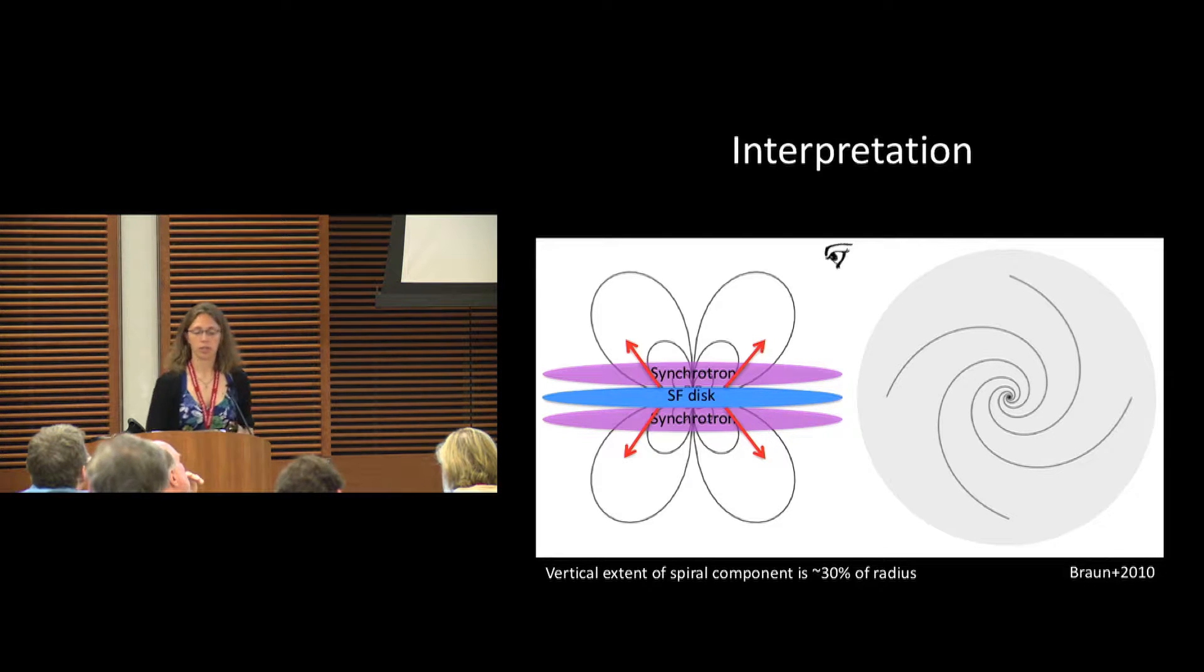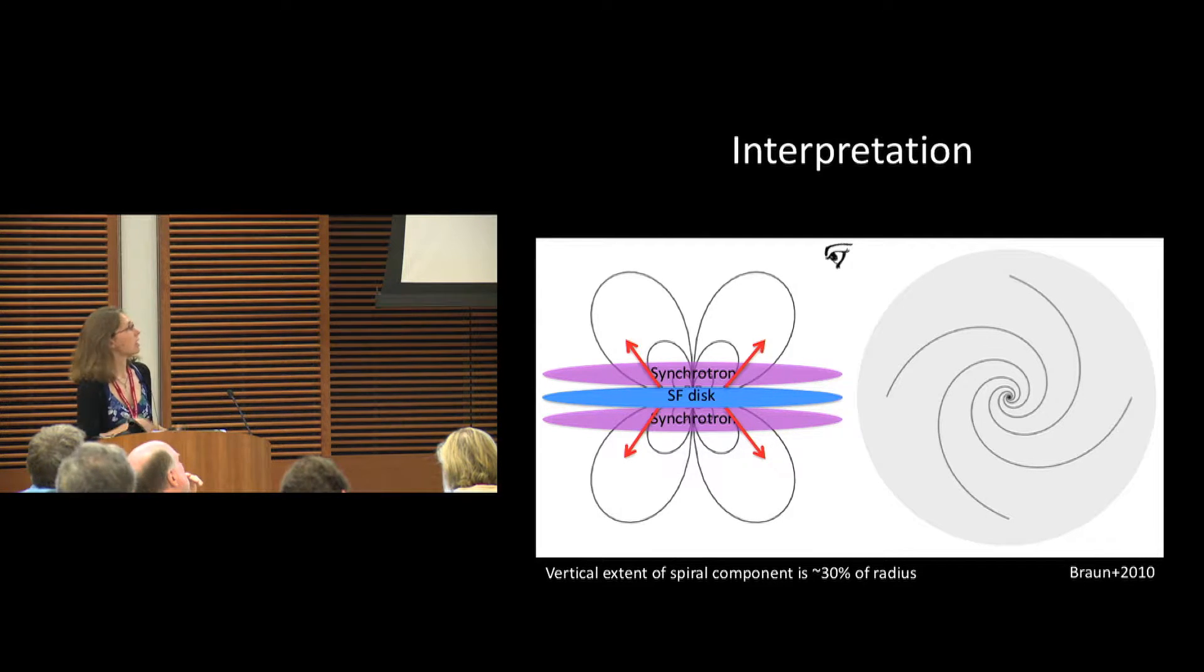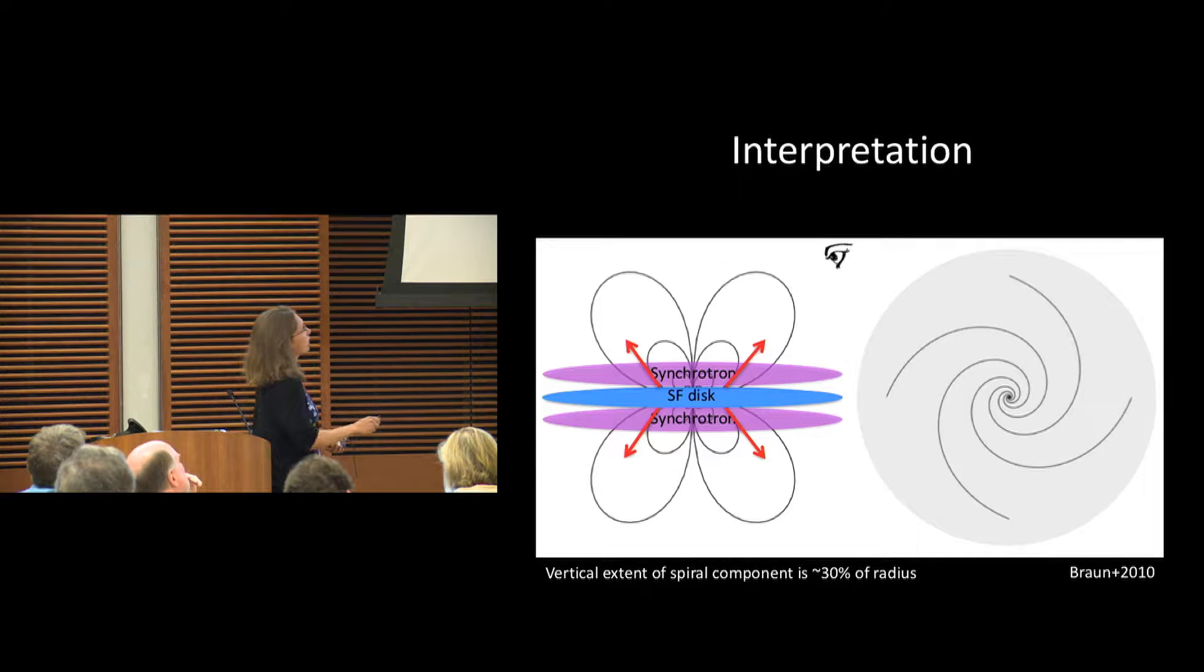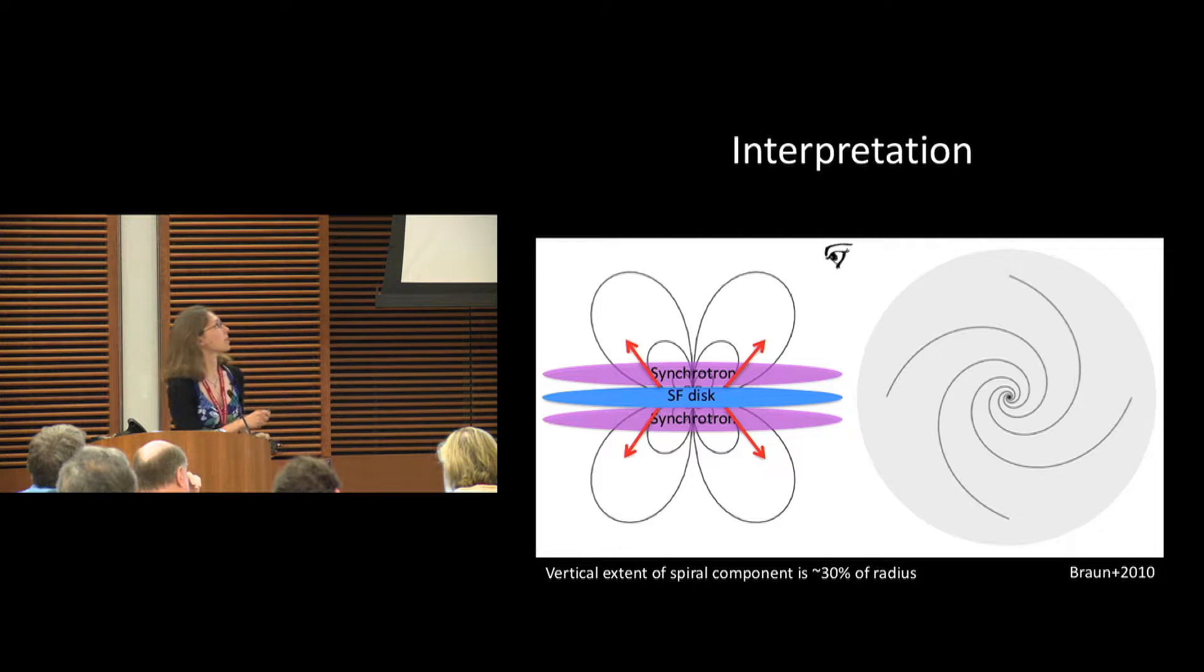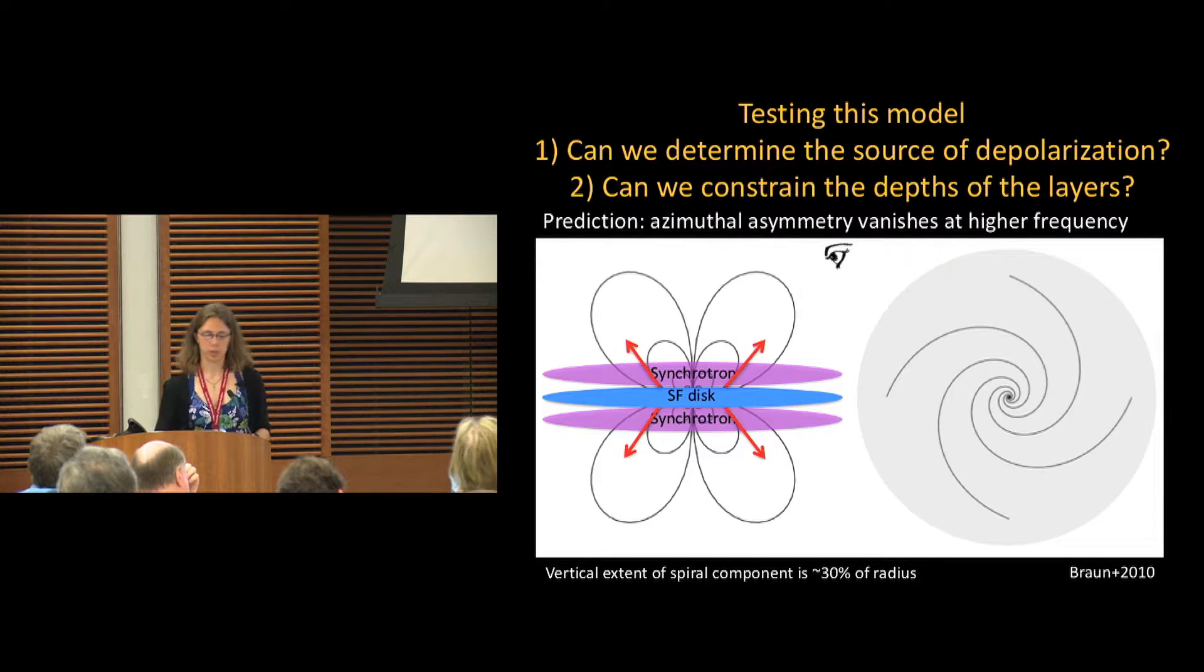If you have a star-forming disk and then synchrotron emission in the layers immediately around that, you can get Faraday depolarization here, which would cause a decrease in your polarization. On this side is where you're getting that peak in polarization that we saw.